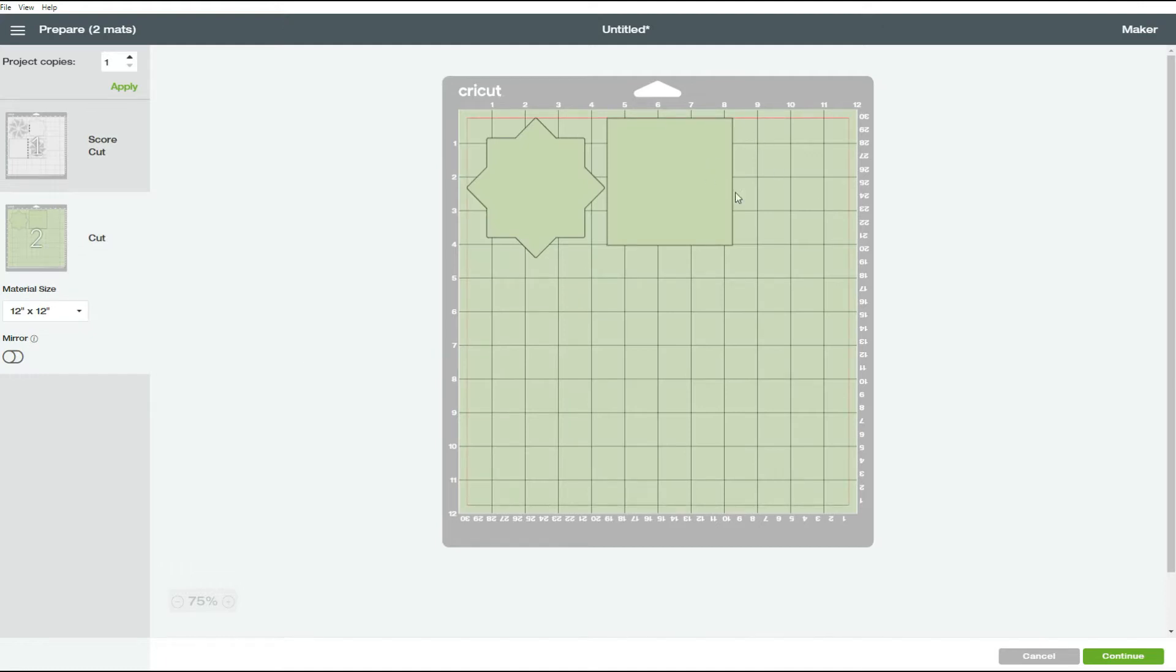Here's your second mat, but you can also cut from a single letter size paper. Then click on continue, cut your pieces and assemble.